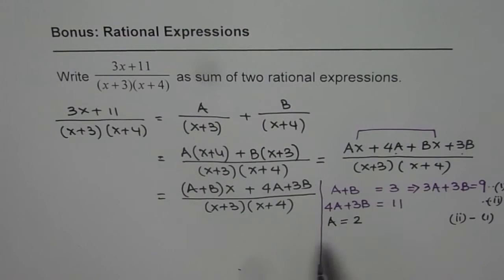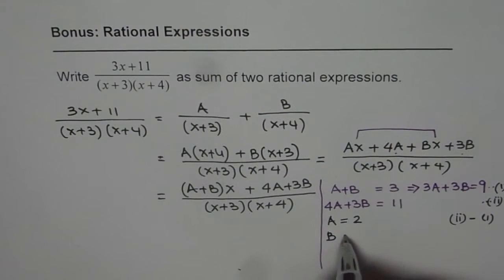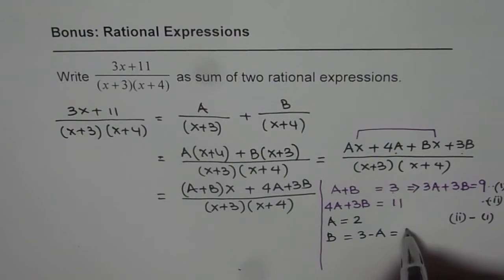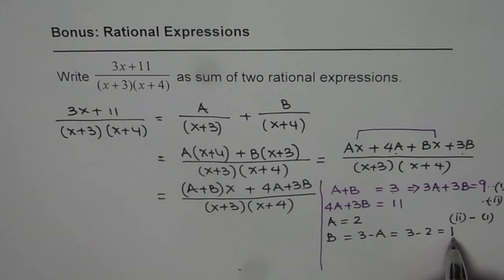To find B, we know B equals 3 minus A, which is 3 minus 2, which is 1. So B is 1 for us.